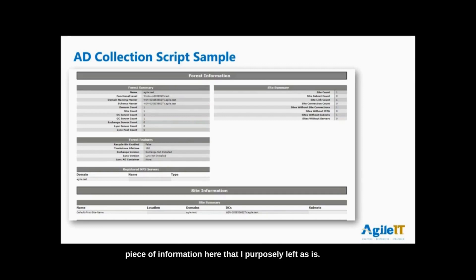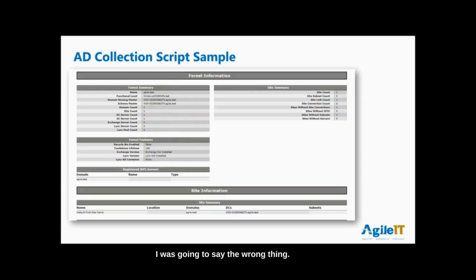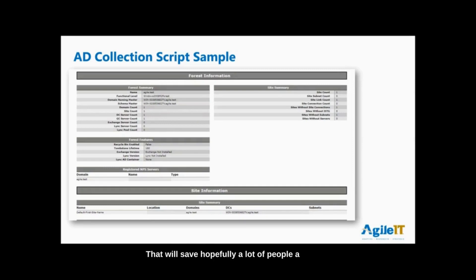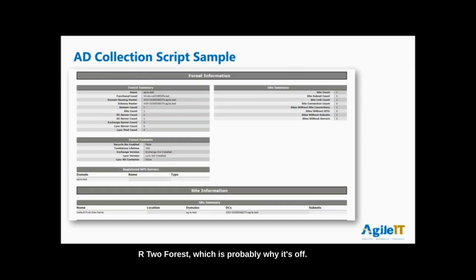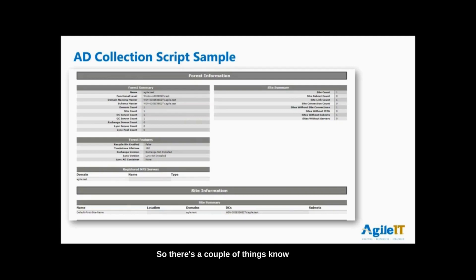Looking at this report from our demo environment — right out of the gate you can see something we didn't configure in depth. Recycle Bin Enabled is False. That's a huge one — turning it on will hopefully save a lot of people a lot of headaches. And you can see right here it shows Windows Server 2008 R2 forest, which is probably why it's off — it was false by default at that forest functional level.